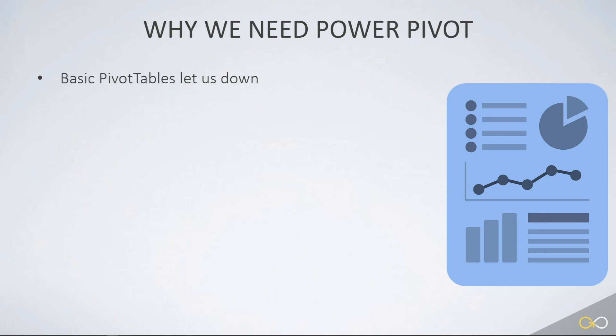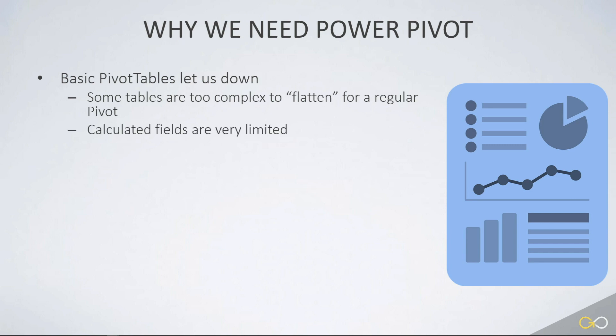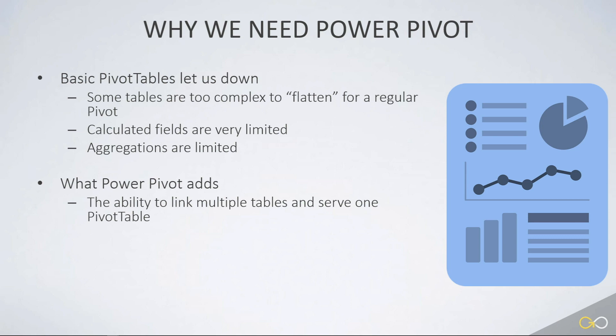Basic pivot tables will at some point let us down — some tables are too complex to flatten for a regular pivot table to use. There's a calculated field language inside a basic pivot table, but unfortunately it's very limited; it even limits the kinds of aggregations you can use. If you've ever looked for a distinct count in a regular pivot table, you'll know what I'm talking about. What Power Pivot adds is the ability to link multiple tables and serve one pivot table from a multiple-table source, instead of having to flatten everything into one table first. It also adds a robust language to build complex pivot table formulas — this language is so robust that we'll touch on it in this course, and it's like Excel formulas: there are hundreds of things you can work with.